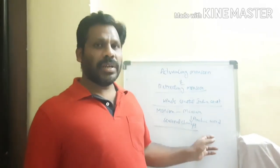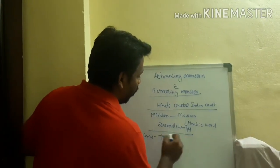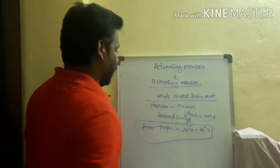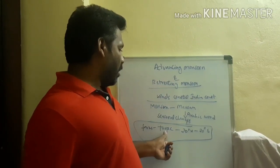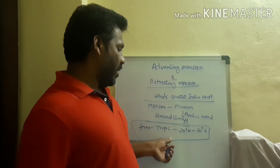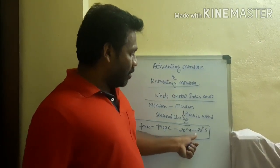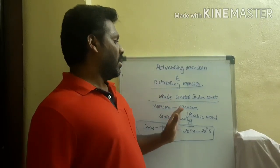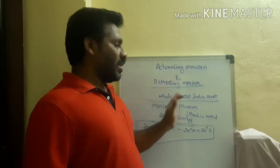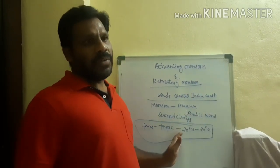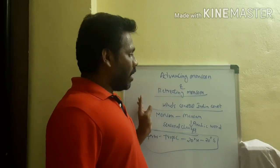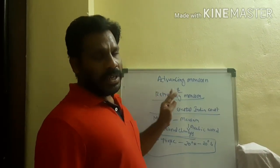Monsoons form at the tropical zones — from 20 degrees north latitude to 20 degrees south latitude, that is from the Tropic of Cancer to the Tropic of Capricorn. The southeast monsoon winds from the southern hemisphere carry moisture over the Indian Ocean to the equatorial low pressure belts.